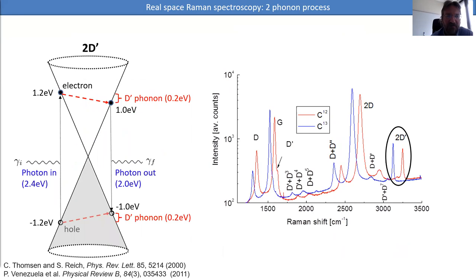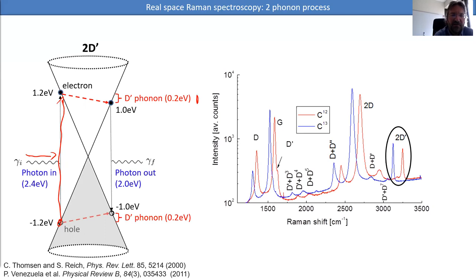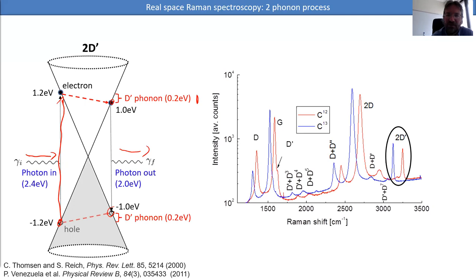The 2D prime is usually the highest energy phonon you can measure in Raman. The standard picture, due to Thompson and Reich around 2000, proposes: a photon comes in at about 2.4 eV, exciting an electron to the conduction band. That electron scatters with a phonon and loses energy equal to the phonon energy. The same happens to the hole, which scatters with a phonon of opposite momentum. The electron and hole then recombine to emit a photon of lower energy — reduced by twice the phonon energy. This explains the appearance of the 2D prime peak, analogous to the 2D peak.